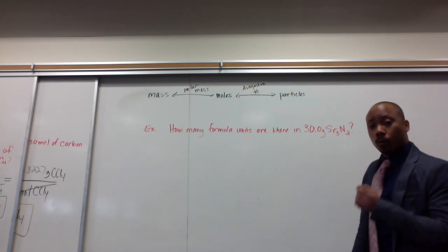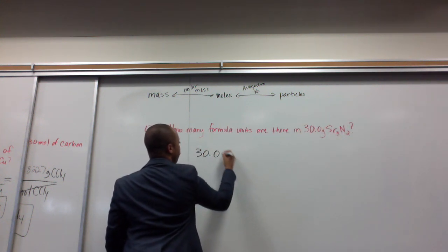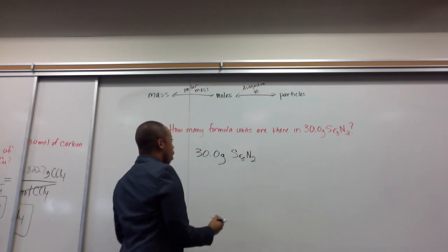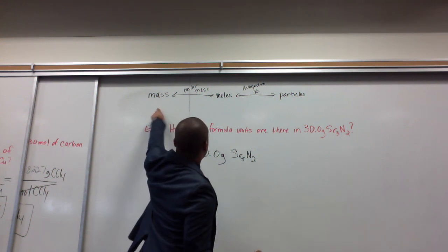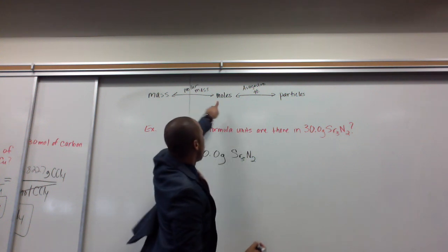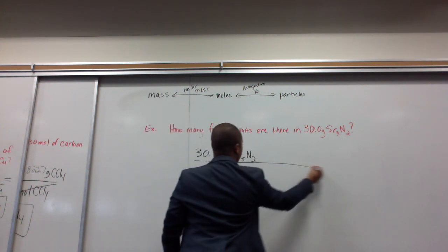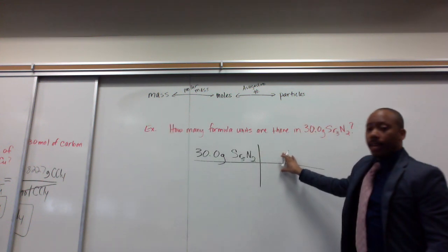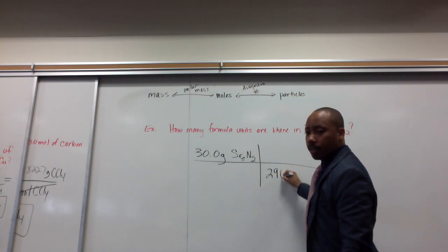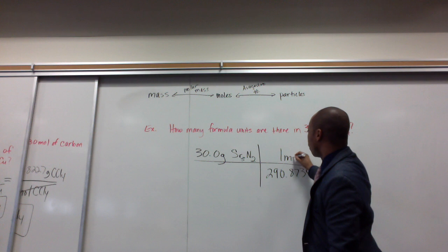Now, I start off the same way with what I'm given. I'm given 30 grams strontium nitride. Now, from a given mass, I want to go to moles in order to get to particles, which is a formula unit. So, I have to go to moles. I go to moles through the molar mass. So, the molar mass of strontium nitride, I calculate that using the periodic table. And the molar mass of strontium nitride comes out to 290.8734 grams for every one mole. This is a heavy one.